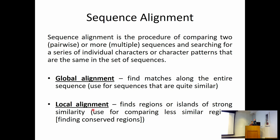Local alignment is actually what's mostly done in large database searches, because the software doesn't necessarily know if you're just searching for a domain or even a small motif. Local alignment makes the assumption that there might be large regions of sequence on the N-terminal, C-terminal, 5-prime, or 3-prime ends that may not match. It's trying to maximize a local region where the query sequence and target sequence are similar - and who cares about the ends.